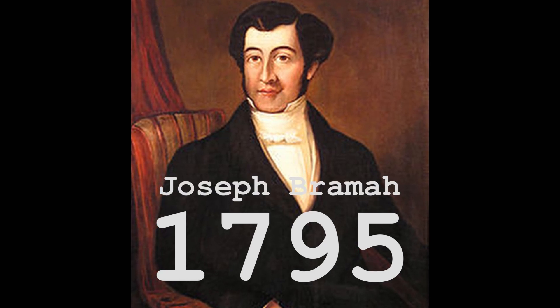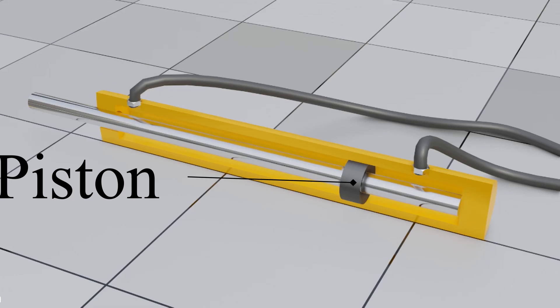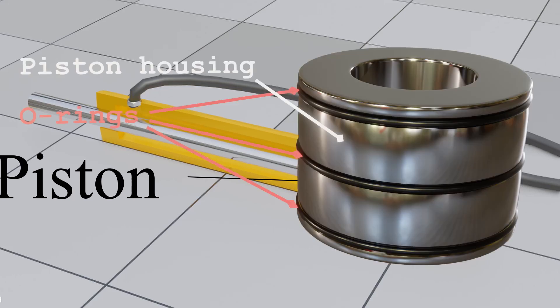To understand how a hydraulic system may work, we are going to take a look at a simple mechanism. First, we will need a rod that is inserted into a cylinder housing. The rod has a fixed piston attached to O-rings that seal the gap between the piston and the cylinder housing to prevent leakage to either side.